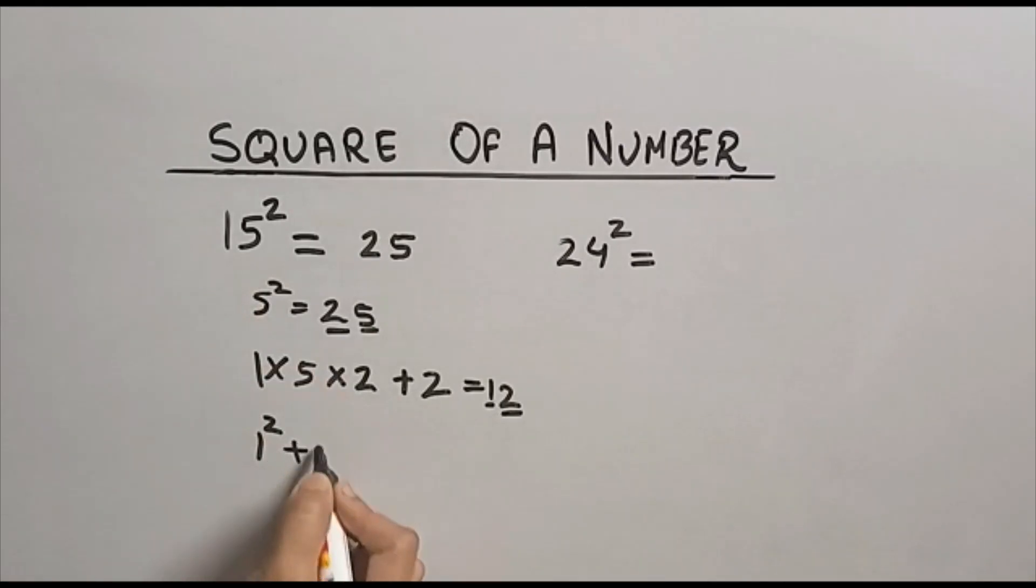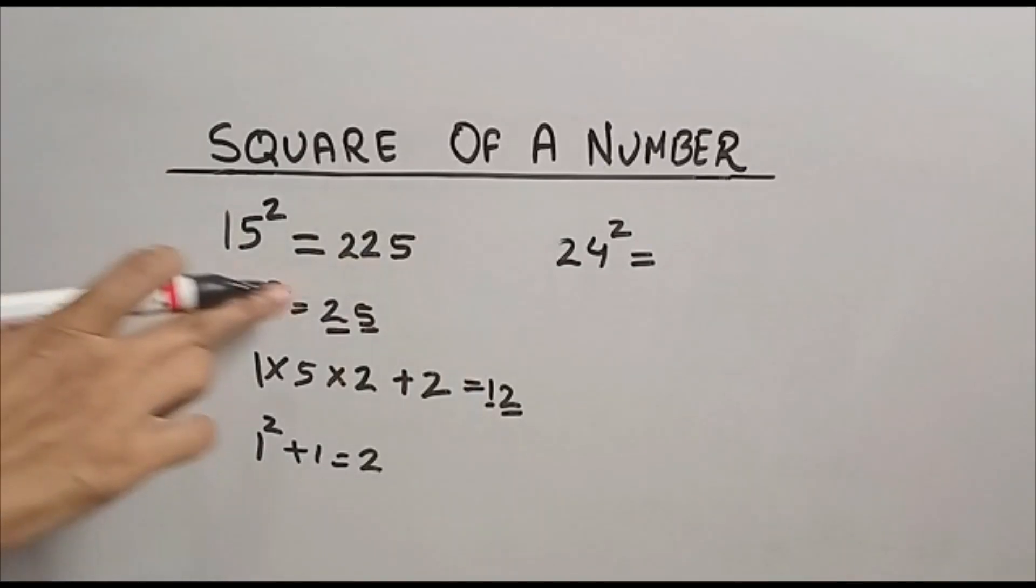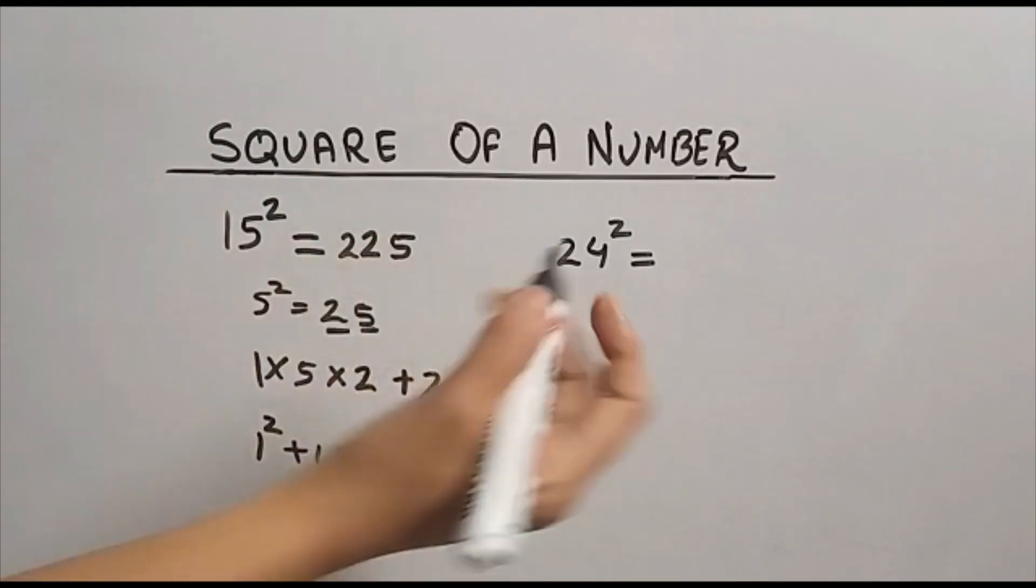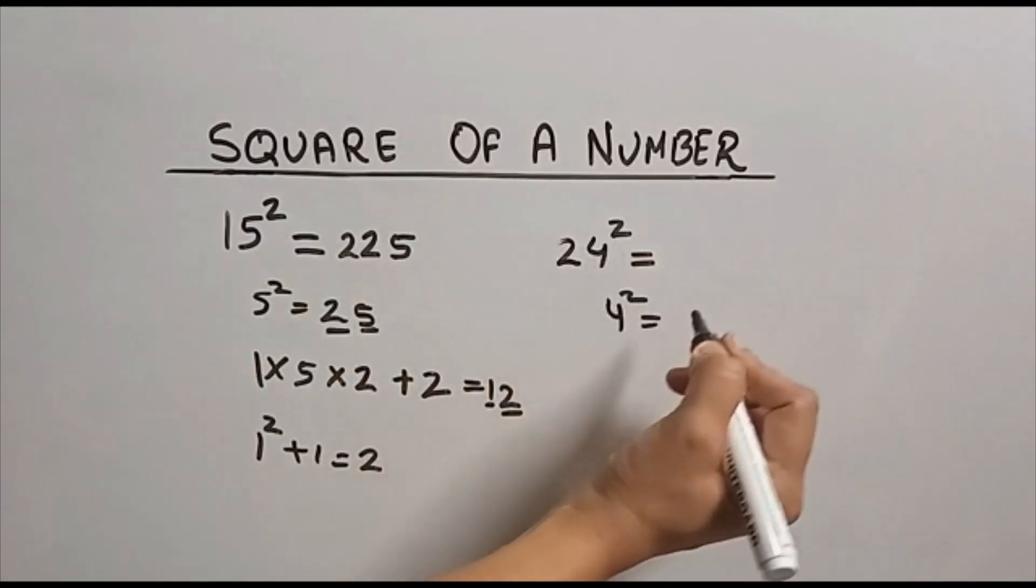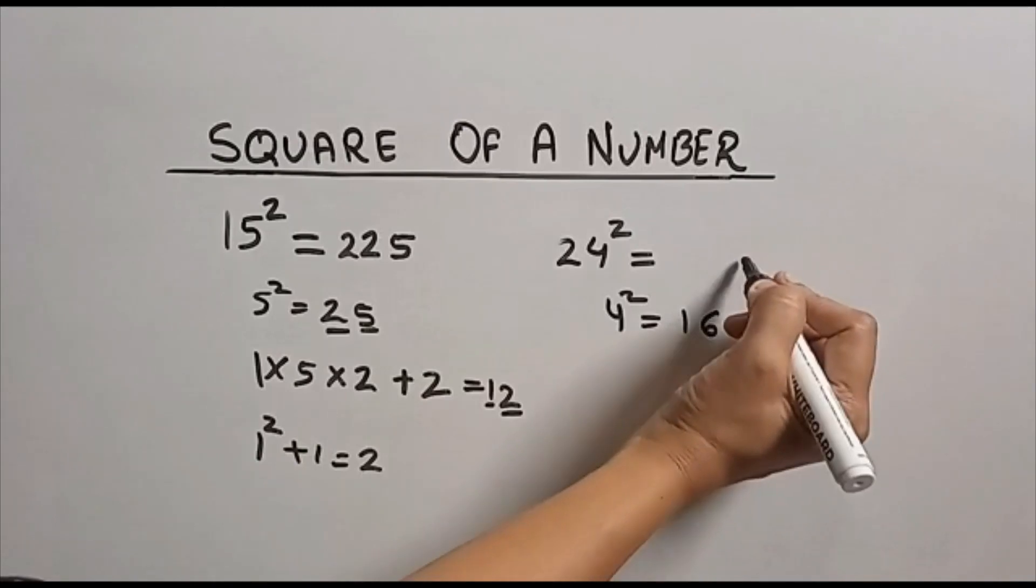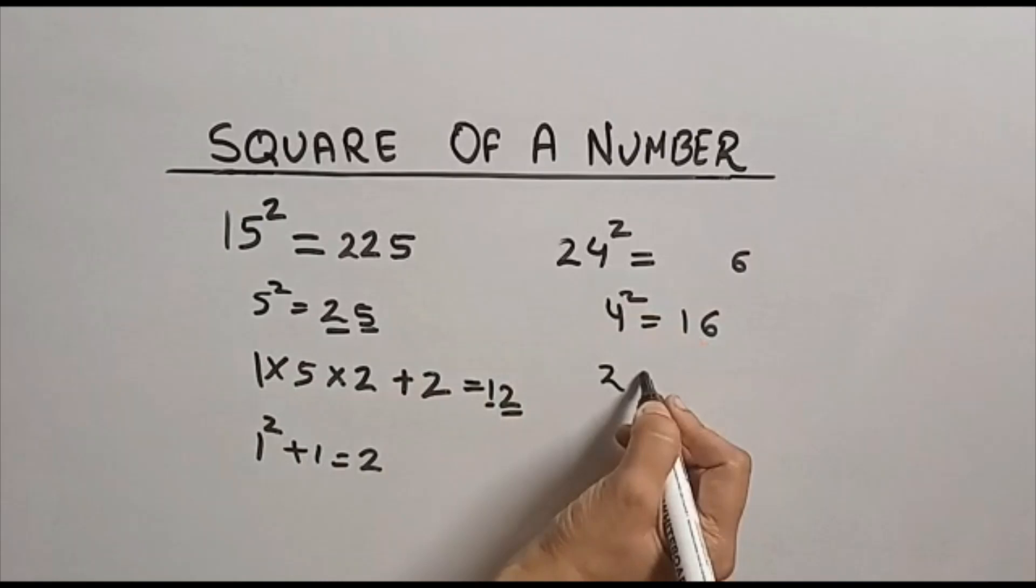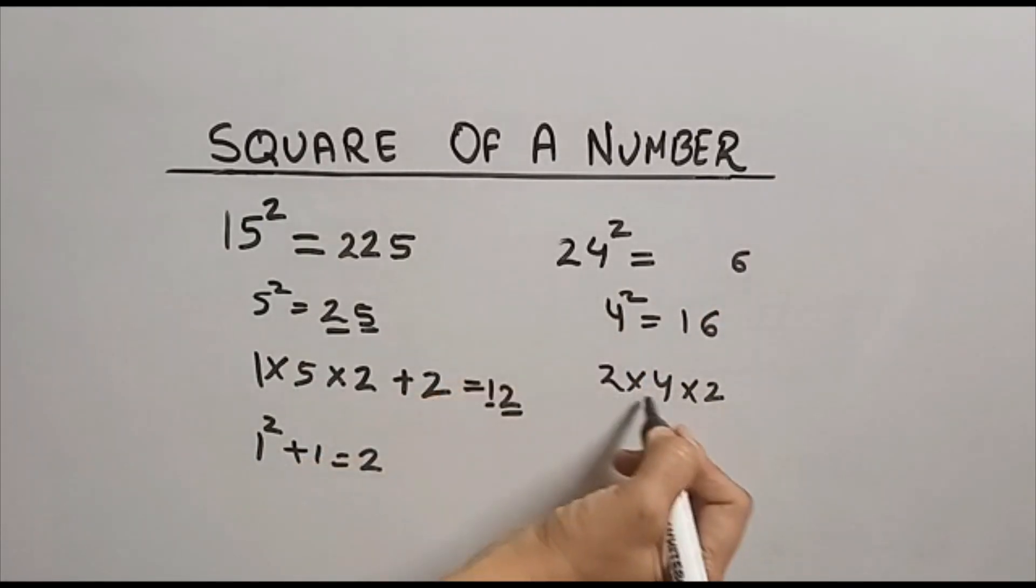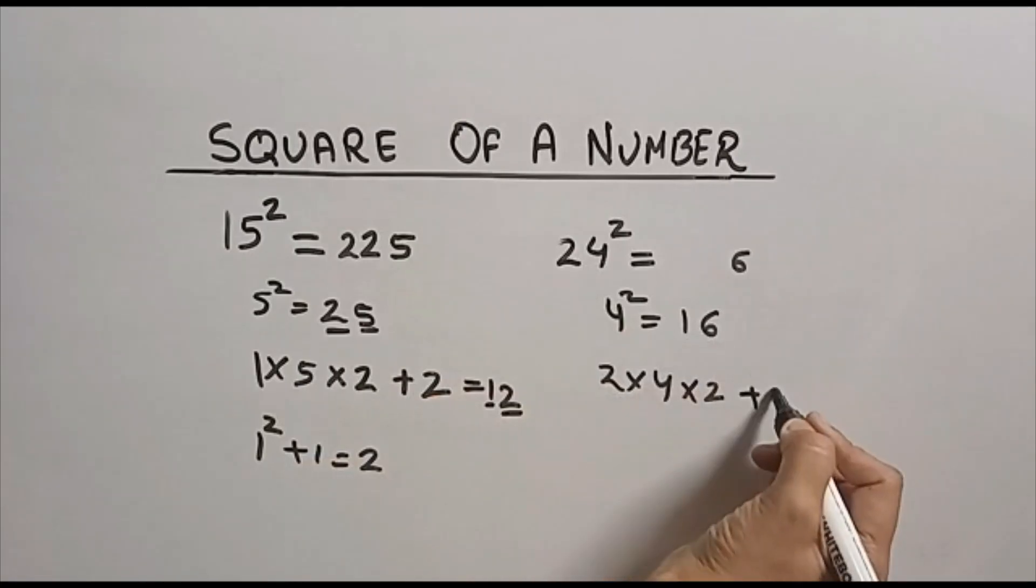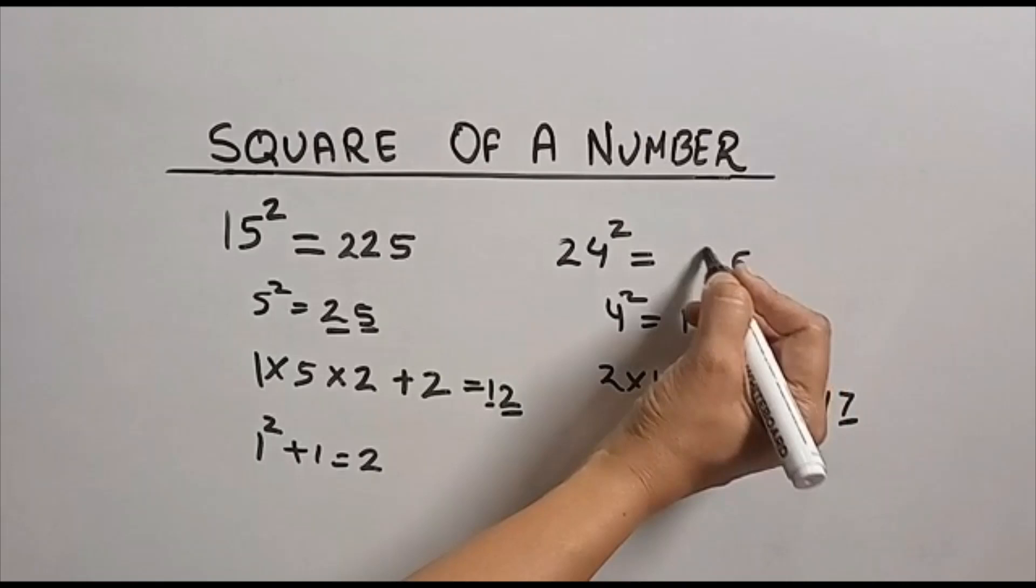Now square of 24. Again, unit place square: 4² is 16, this 6 I am writing here. Now I am going to multiply these two numbers: 2×4×2. Double: 2×4×2 plus this tens place. 2×4 is 8, times 2 is 16, 16 plus 1 is 17.